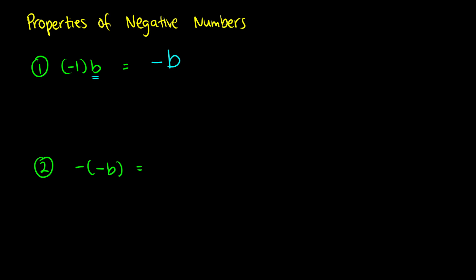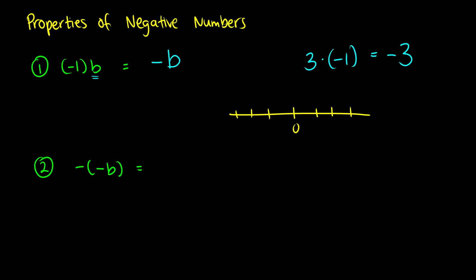For instance, if I have the number 3 and multiply that by negative 1, what I get as a result is negative 3. If we think about this on the real number line — let's put 0 here and 3 over here — essentially when you multiply something by a negative number, you're flipping that number to the other side of the number line. So multiplying by negative 1 is like flipping everything 180 degrees.